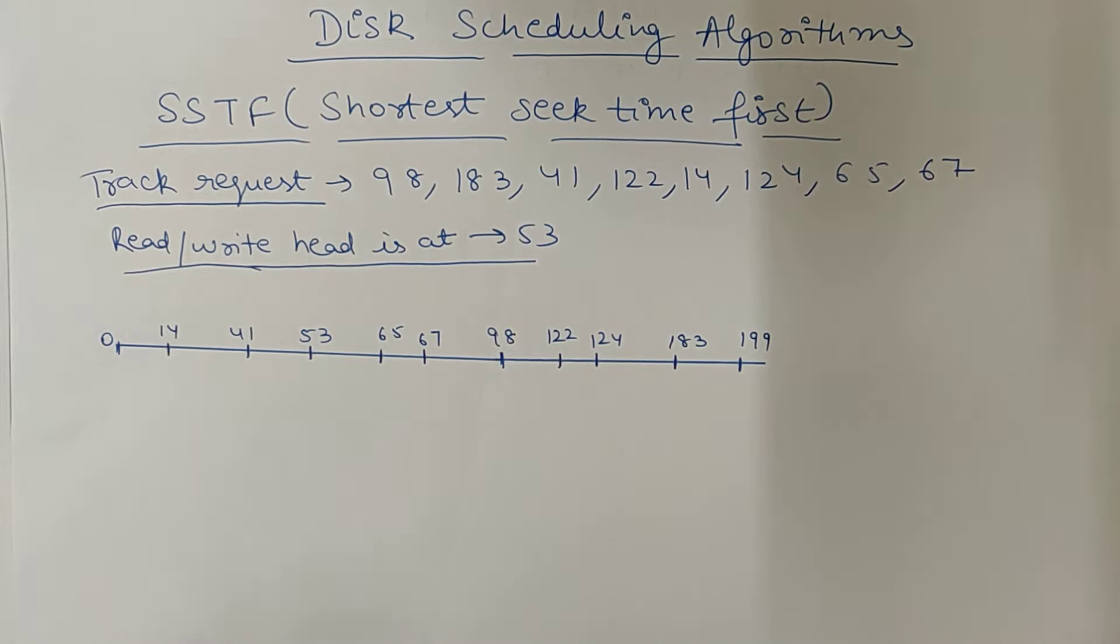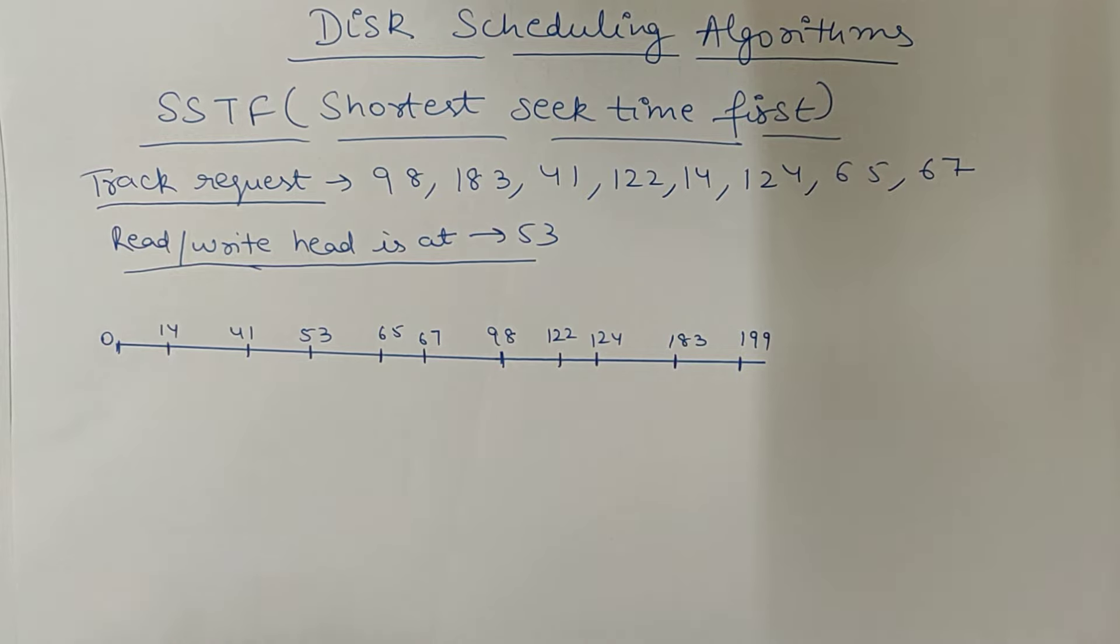But here, what was the disadvantage? The seek time, the time of track movements was very much, like 632. So, to overcome that, we will see that the nearest requests, the next requests, they will fulfill it. Don't see which request was first.